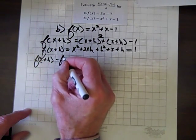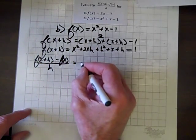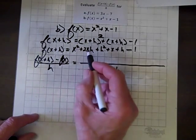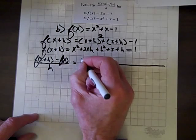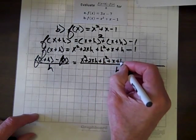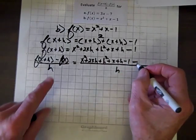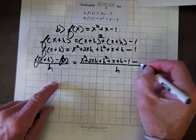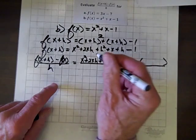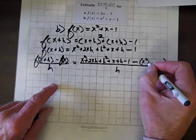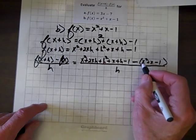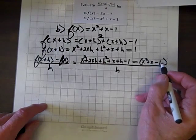Now we set up [f(x+h) minus f(x)] all over h. In place of f(x+h) we install its identity: x squared plus 2xh plus h squared plus x plus h minus 1. Then minus, and in parentheses we install f(x) in the form of its identity: x squared plus x minus 1. These parentheses are terribly important — they remind us we have to distribute that negative to each term.